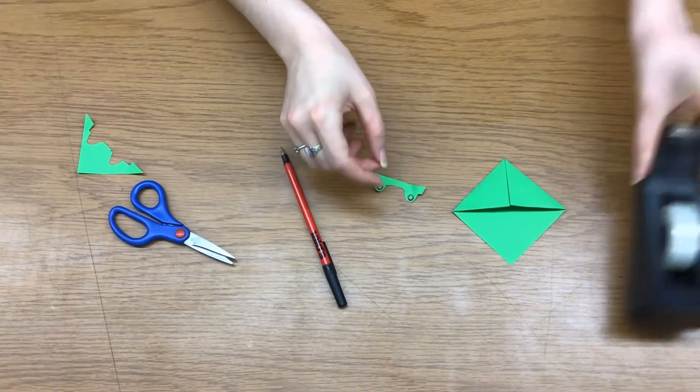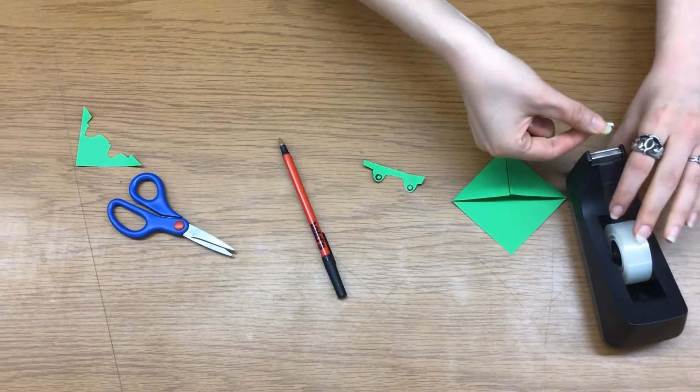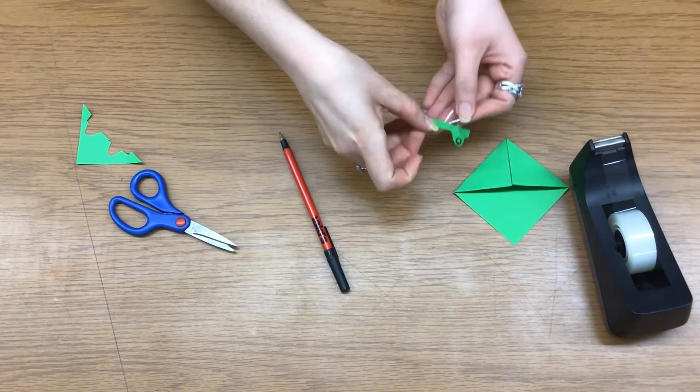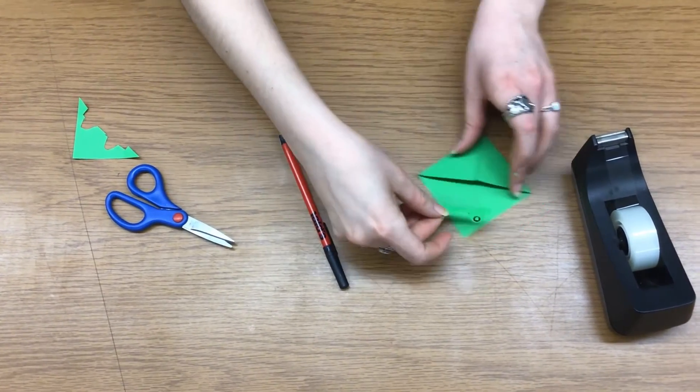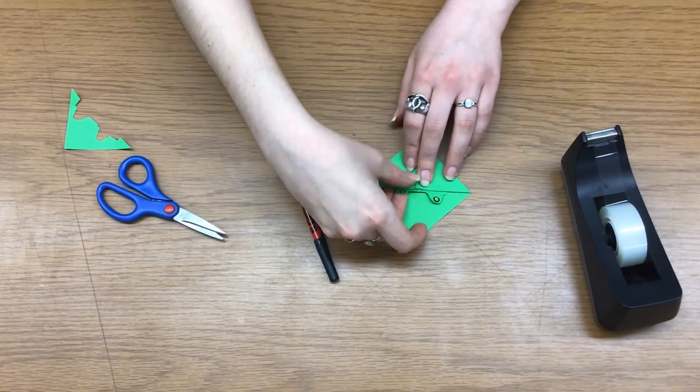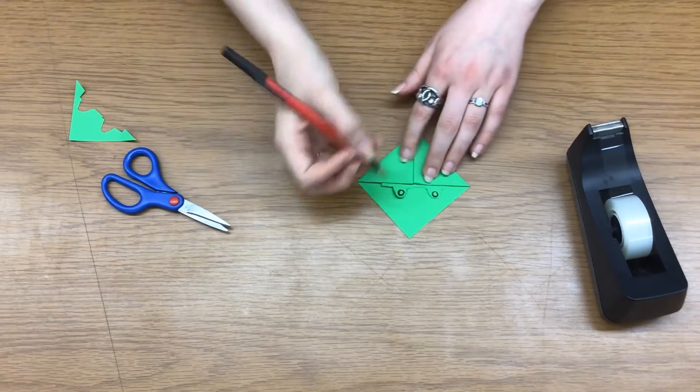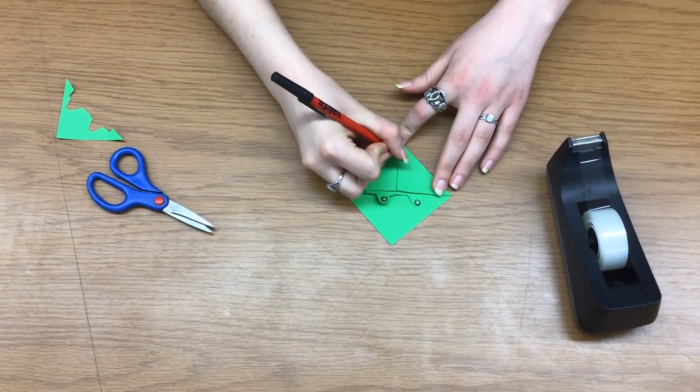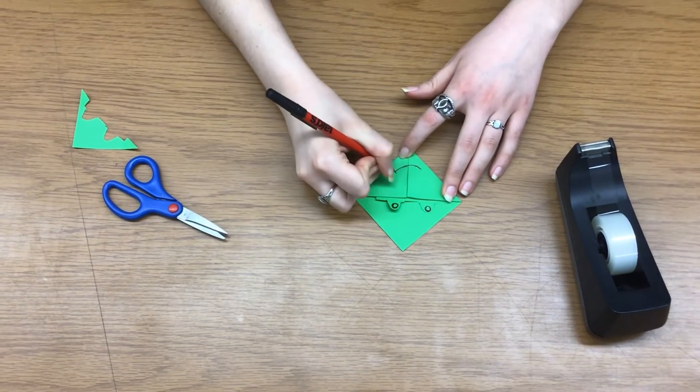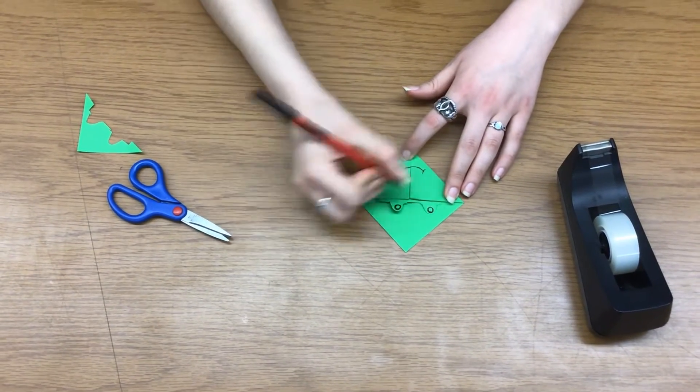And with some tape we're going to add that to our bookmark. And then we'll give him cute little froggy mouth.